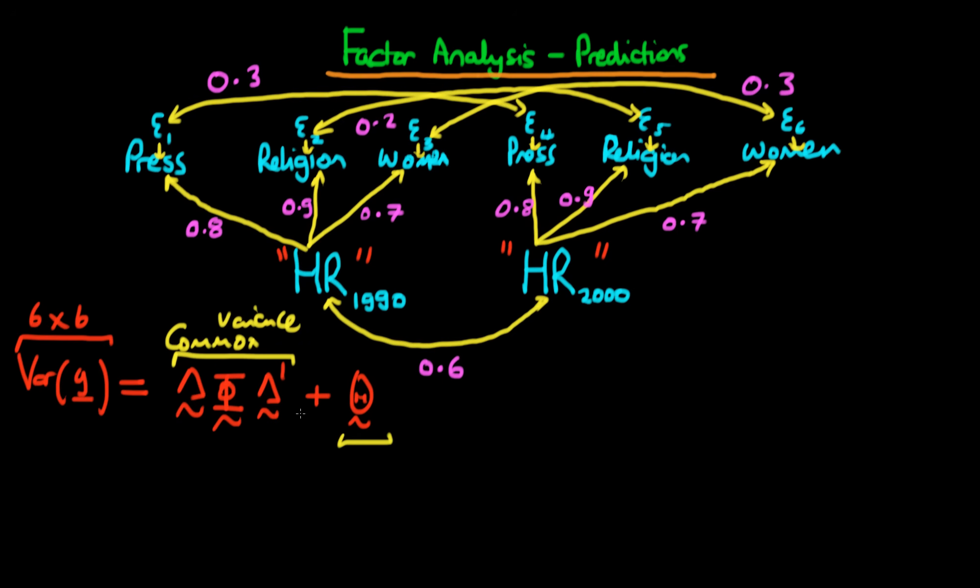What about this term here, which is the theta term? Well, this represents the variance of our indicators, which is solely due to factors which are not those factors which we include in our model. So in the example up here, where we've got press correlating with press in 2000, then we assume that that's due to perhaps the same sort of survey being used. In no way is that due to our latent factors, which in this case is human rights. So this measure of variance and covariance of the errors is what we refer to as the unique variance.